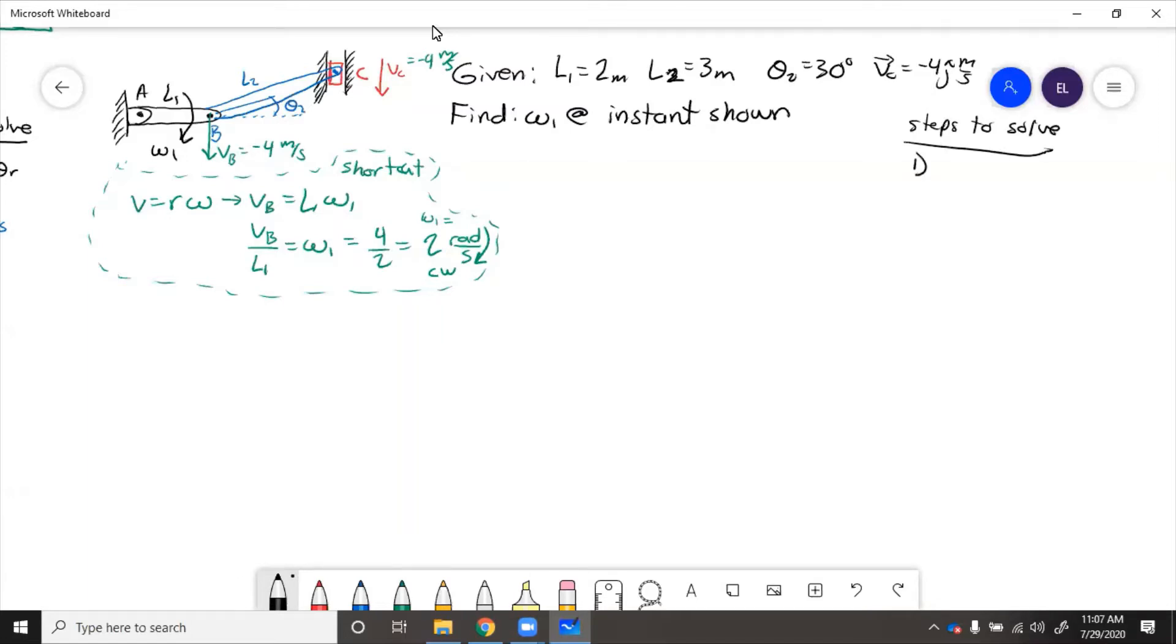So general planar motion steps to solve. Step one is write the general planar motion formula for velocity of the slider, two is match the i and j components, three is solve. So with this general planar motion formula, we know velocity of c equals velocity of b plus velocity of c with respect to b.